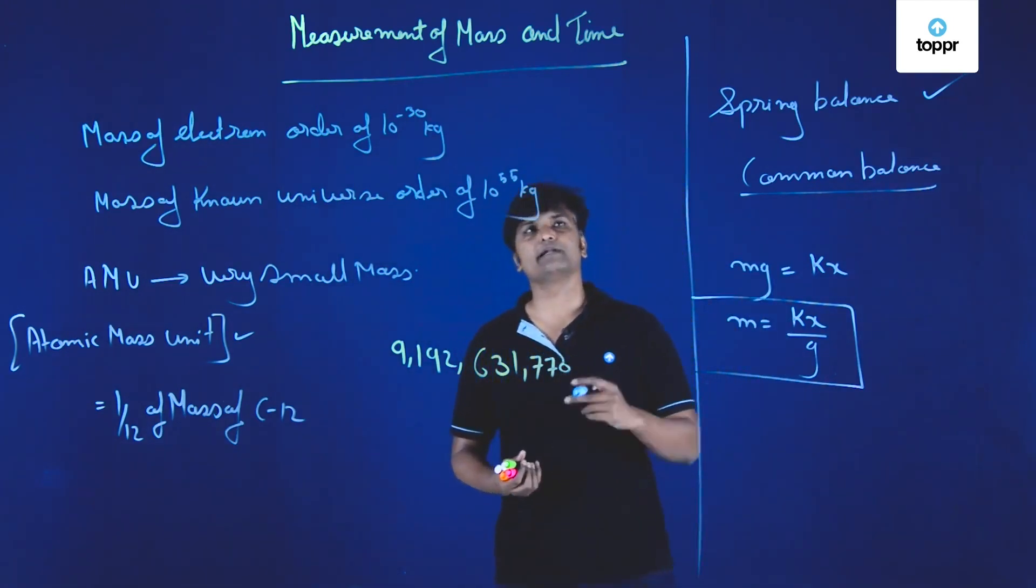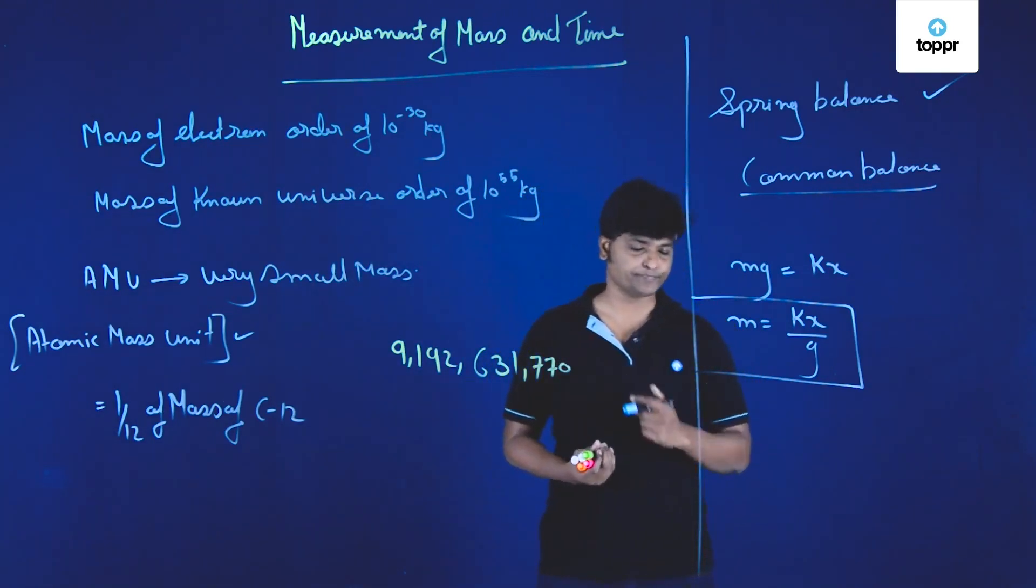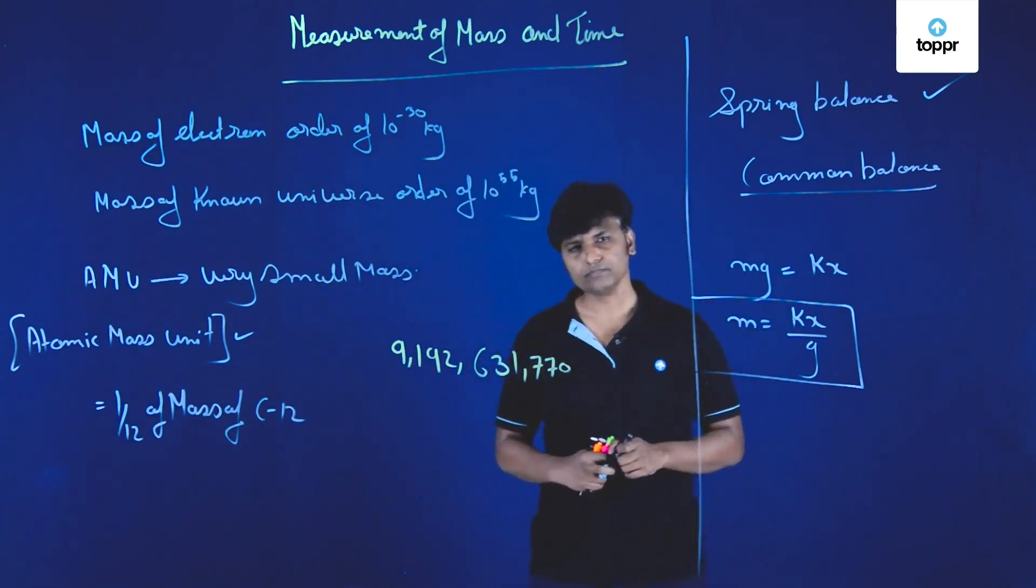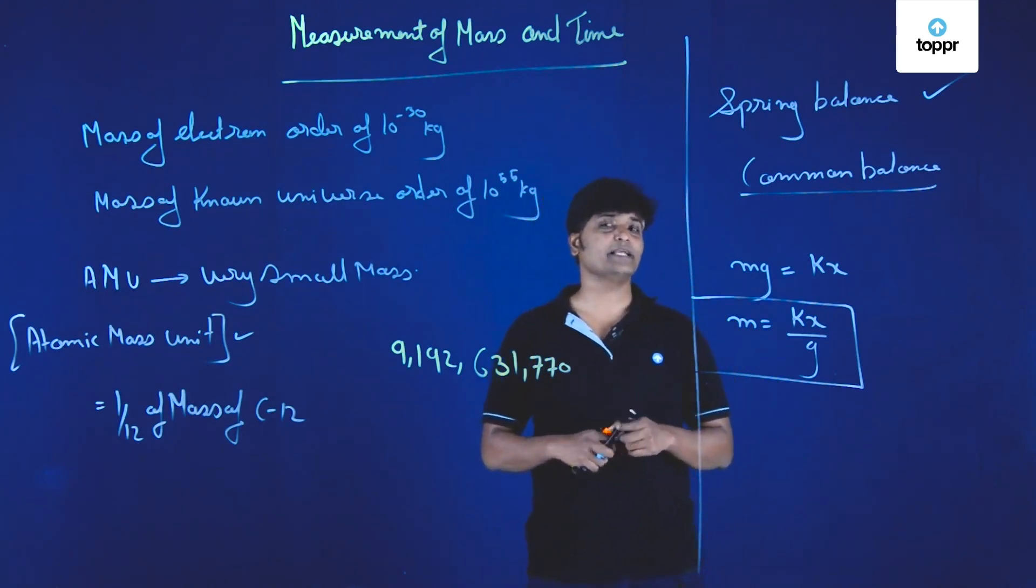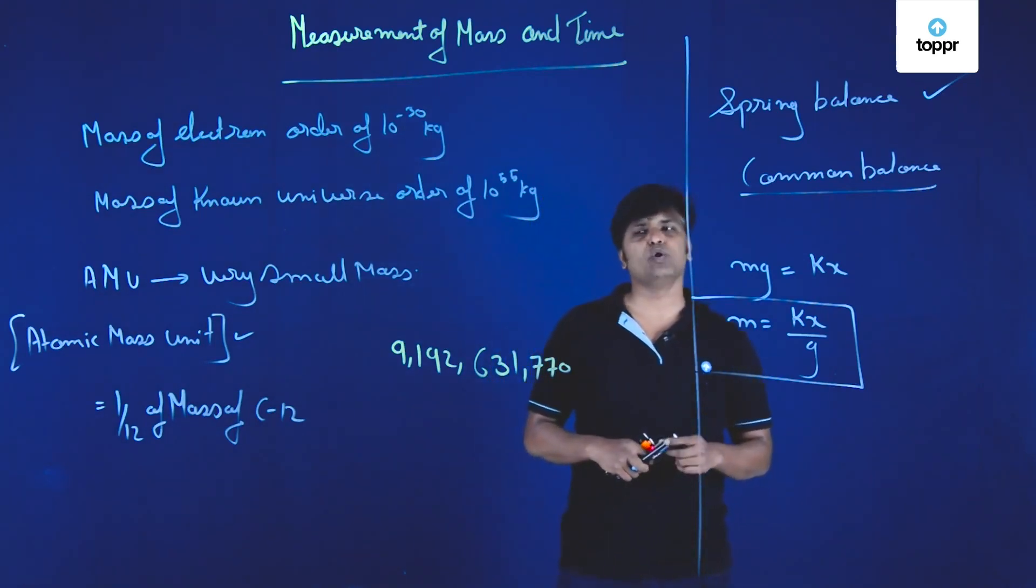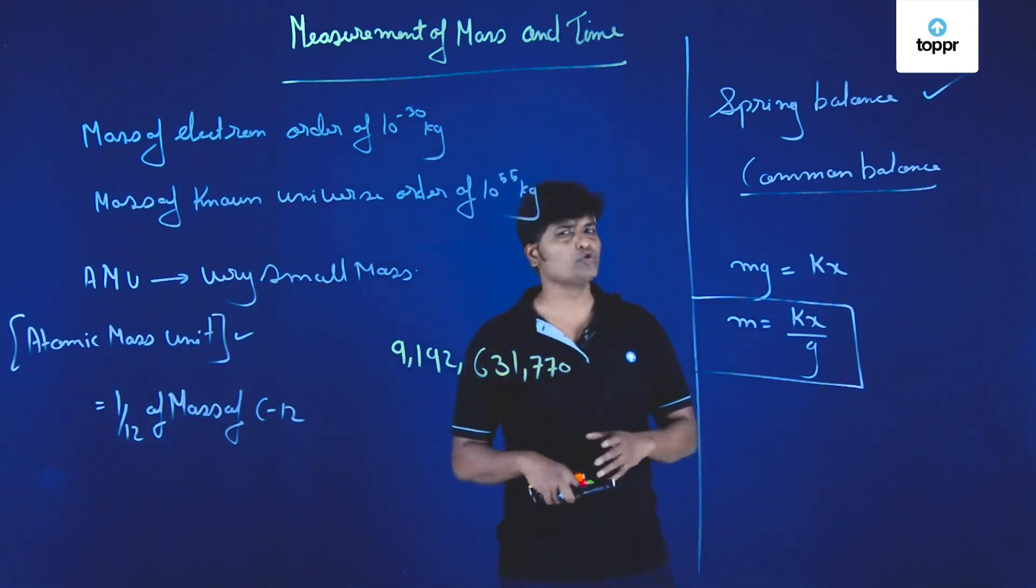Now let us understand how to measure time. Usually the SI unit of time is second. Now initially when there were no watches,